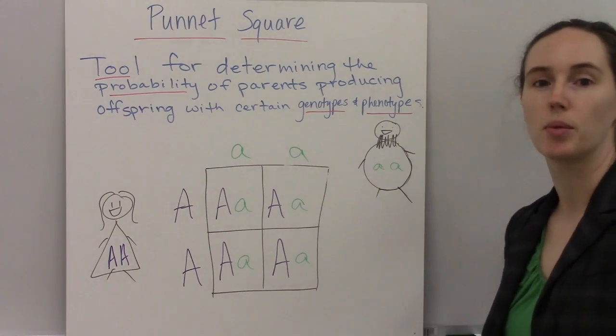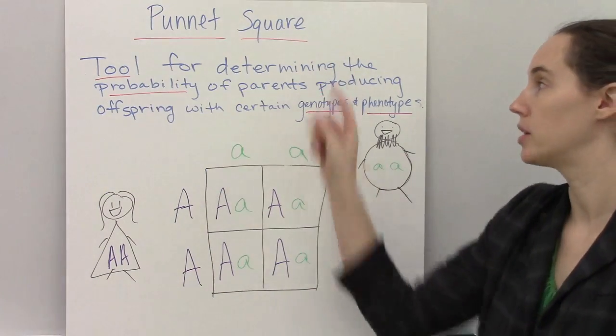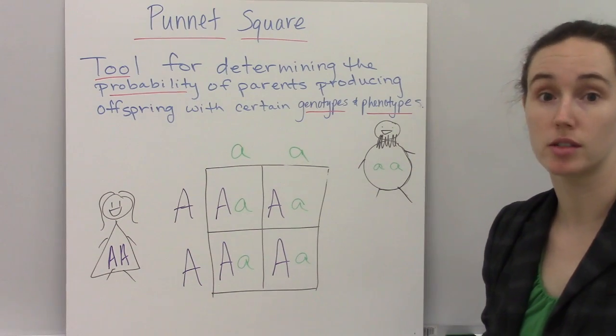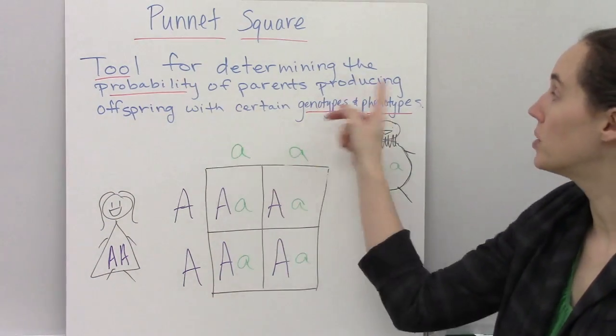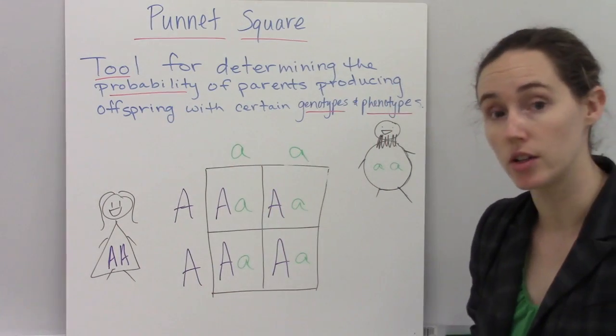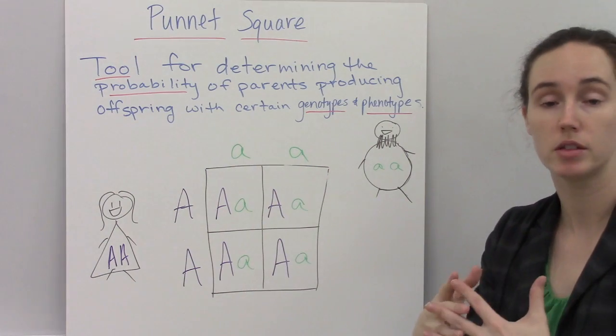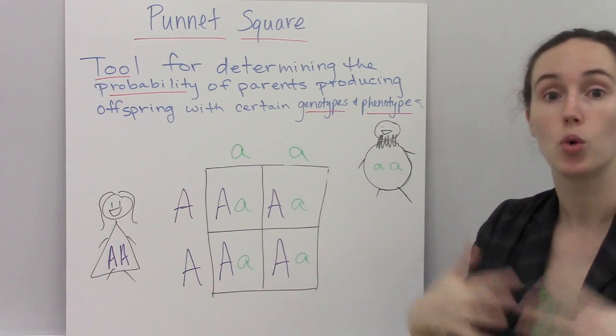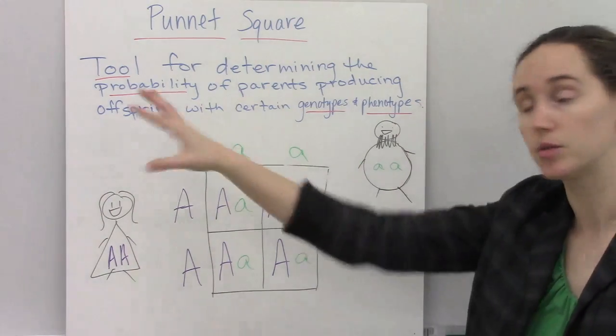This video is about how to set up and analyze Punnett squares. Punnett squares are simply a tool that you can use in genetics to help you determine the probability or likelihood that certain parents, the combination of certain parents, will produce offspring with specific genotypes and phenotypes. So this is a predictive tool.